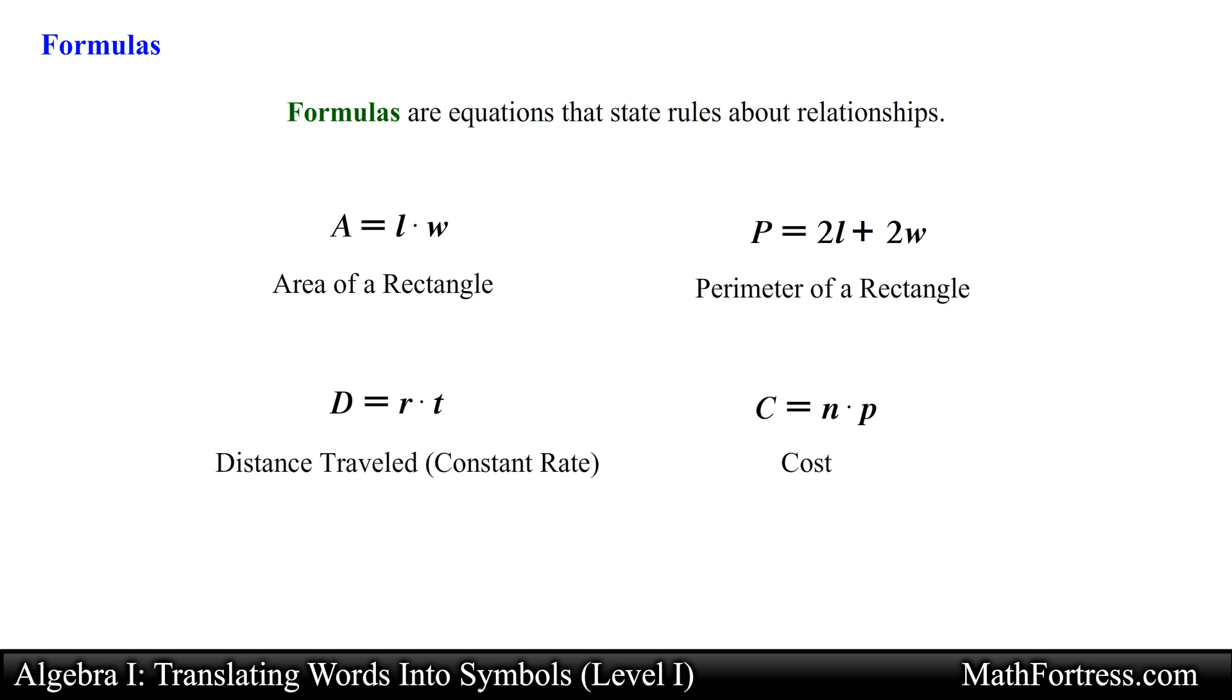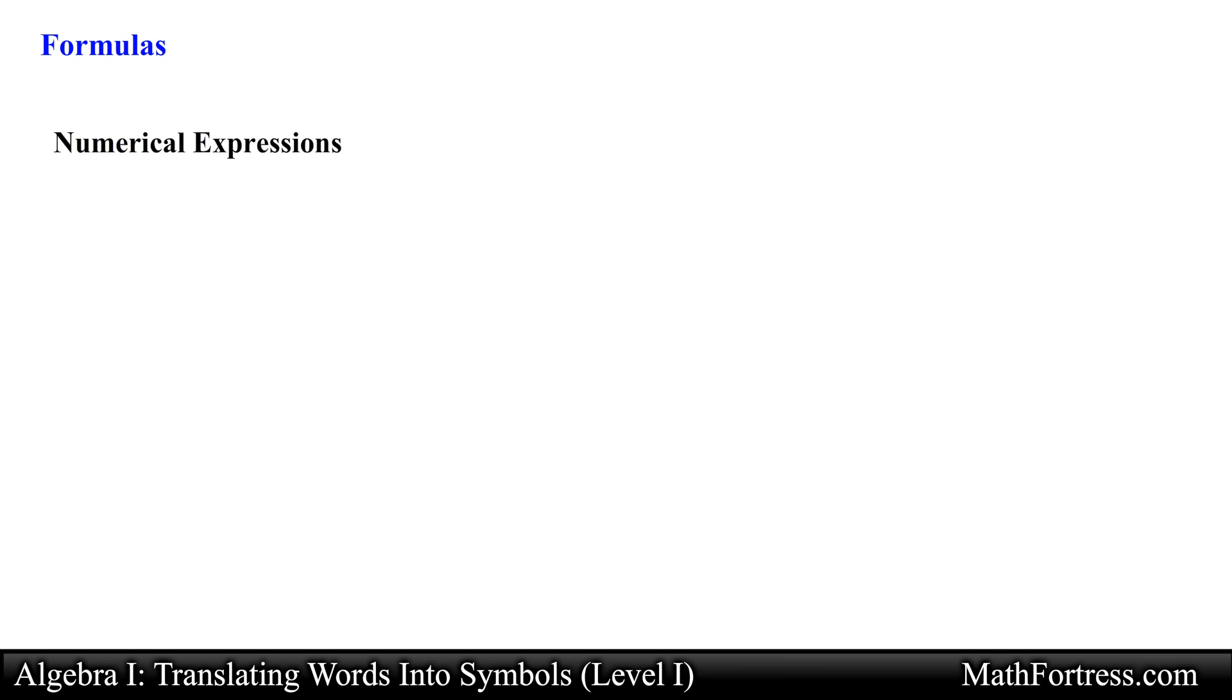When using formulas you need to be comfortable with two types of answers that formulas tend to generate. One of them are numerical expressions and the other are variable expressions. For example say that we would like to find the area of a rectangle whose length is 10 feet and width is 5 feet. Then we will use the formula to find the area of a rectangle and substitute the value for the length and width using grouping symbols as follows. Then we evaluate the numerical expression for a final answer of 50 square feet.